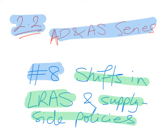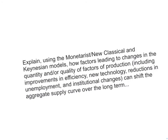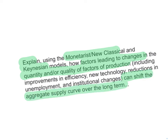This is only an introduction to supply-side policies, as in one of the future units we will talk about them in more detail. The learning objective for this lesson is to explain, using both the monetarist neoclassical model as well as the Keynesian models, how factors leading to changes in the quantity and/or quality of the factors of production can shift the aggregate supply curve over the long term.